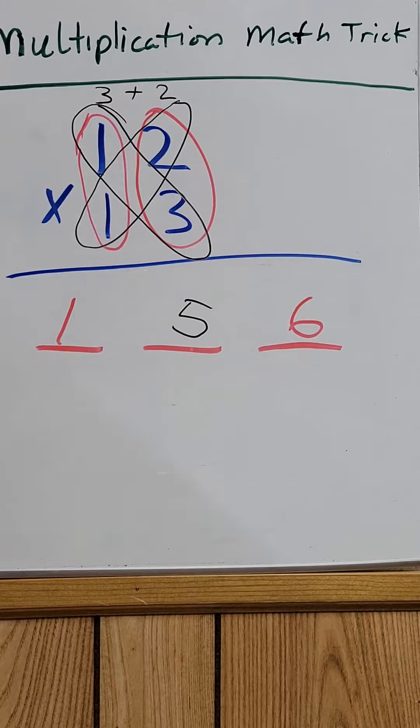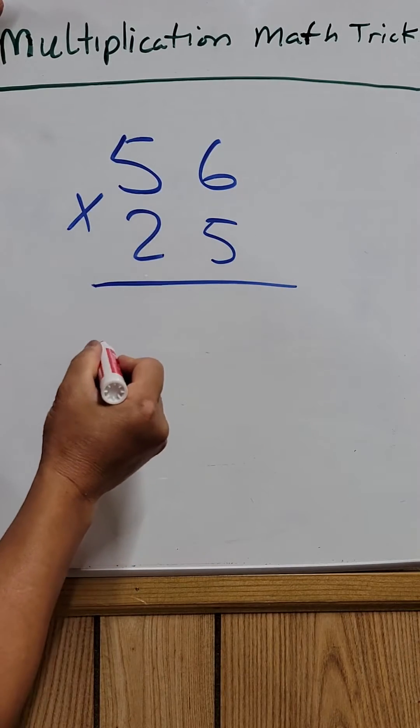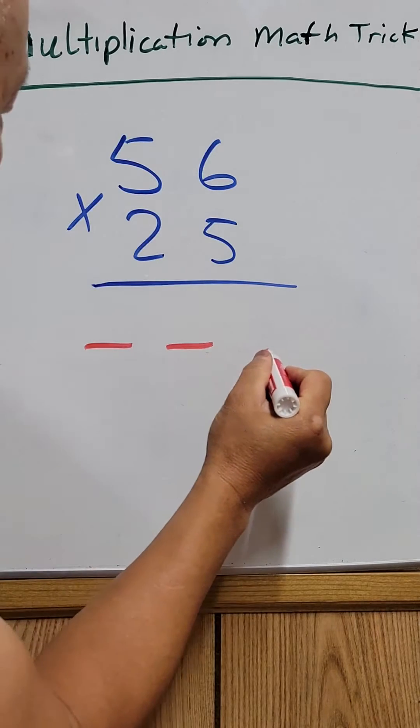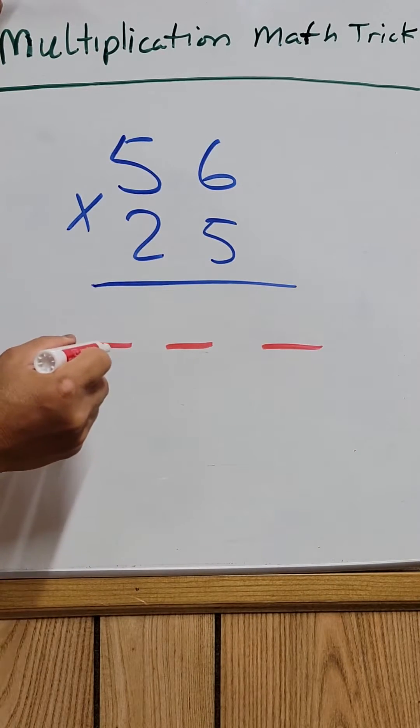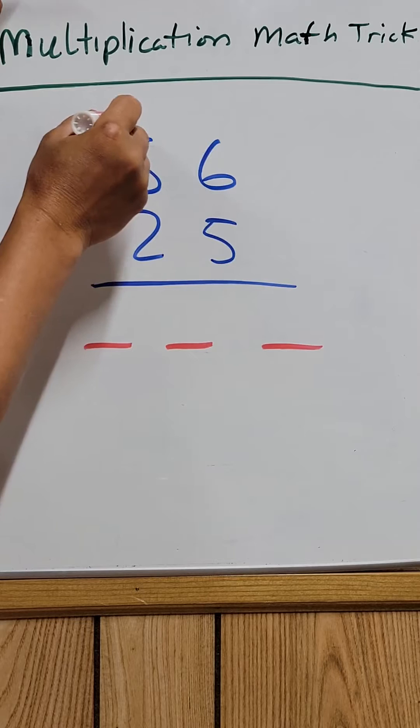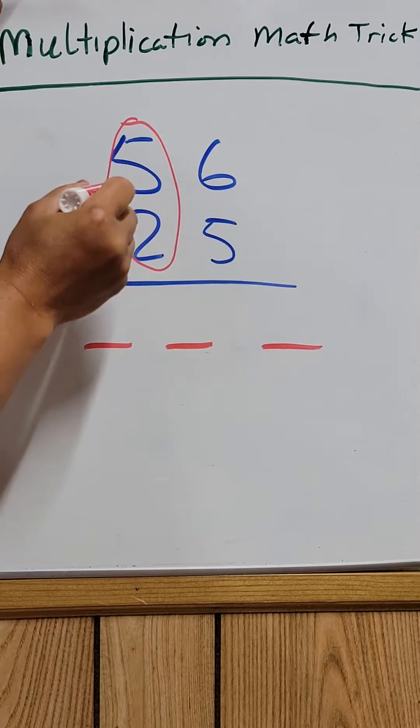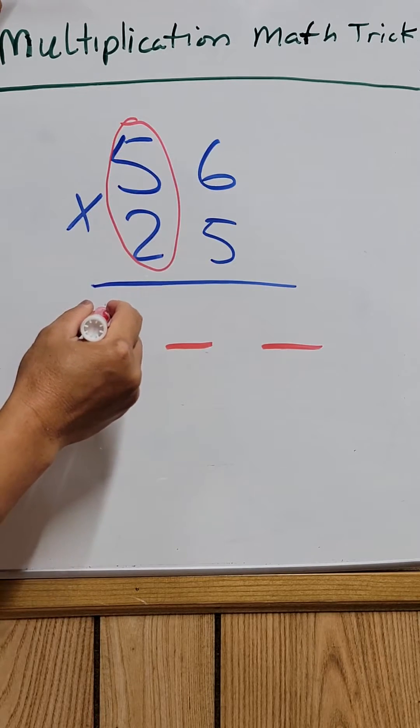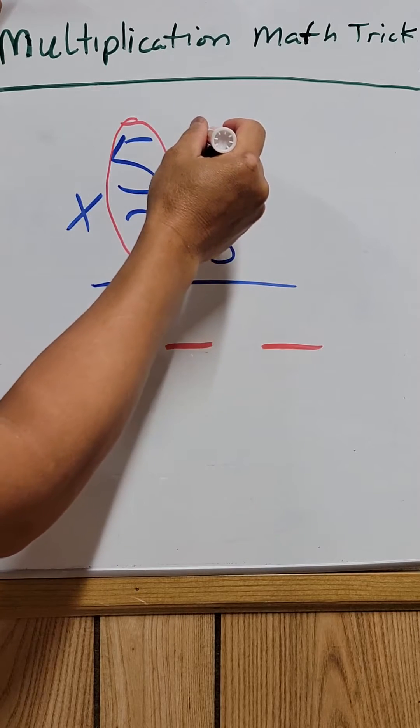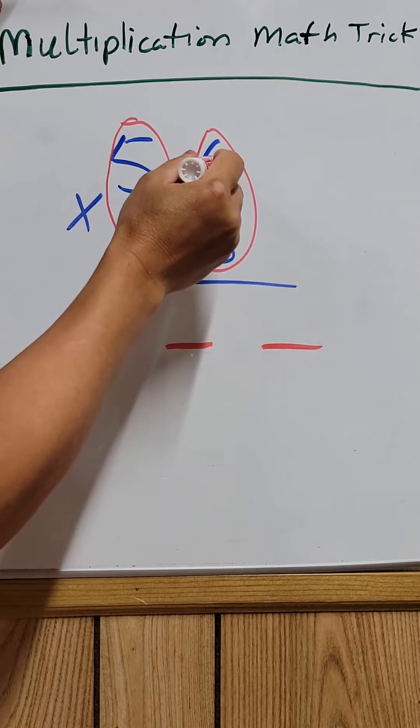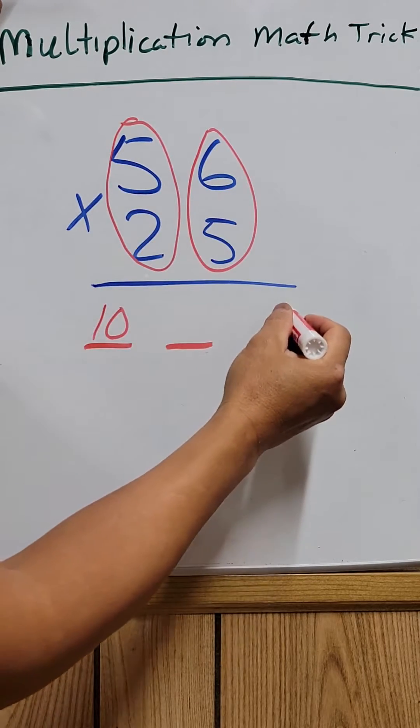Let's do one where you have to do a carryover. 1, 2, 3 slots right here. The first slot right here, you take this times that. 5 times 2 will be 10. And 6 times 5 will be 30. You write that.